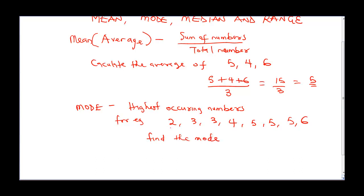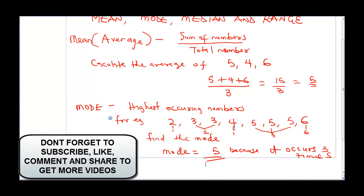Notice 2 occurred 1 time. 3 occurred 2 times. 4 occurred 1. 5 occurred 1, 2, and 3. So 5 came out 3 times while 6 occurred 1. Which one occurred more? Which one has the highest occurring frequency? Mode would be that 5 because it occurs 3 times. So the answer is 5. Our mode is 5. Whenever you see question on mode, look for the one that occurs more than the rest.